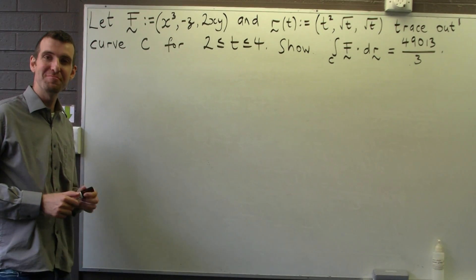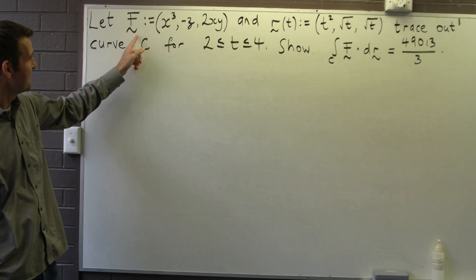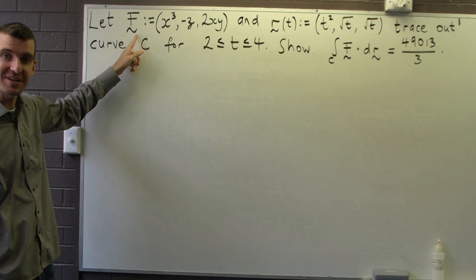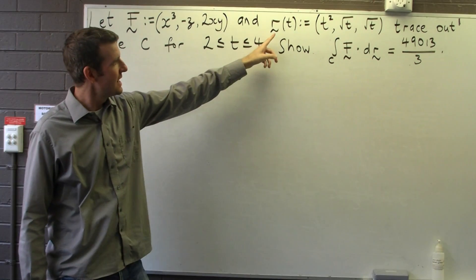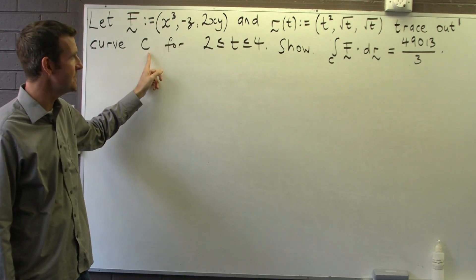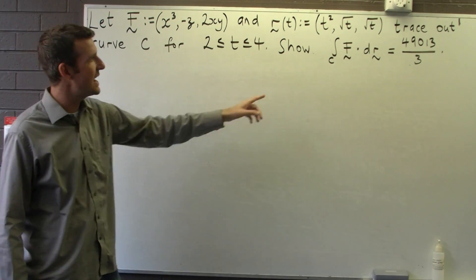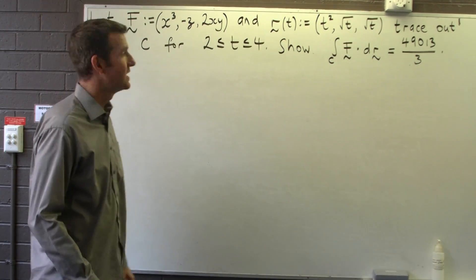So here we're given a problem involving a line integral. We're given a vector valued function F and we're given a parameterization r of a curve C, and we're asked to show that this line integral equals this number.